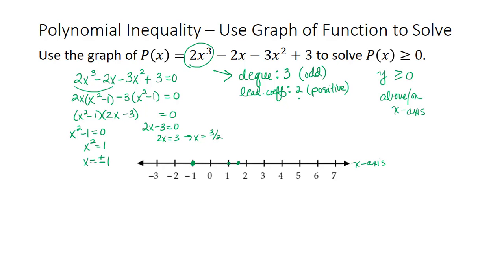Remember, the leading coefficient tells us how it ends to the right. If it's positive, it ends going up. Odd degree tells us the ends do opposite things, so it goes down to the left.